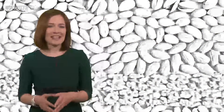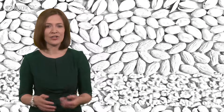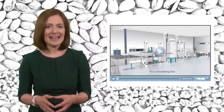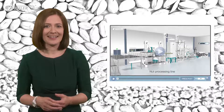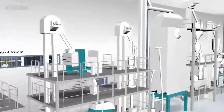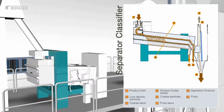Now let's move on to the separator and aspiration channel, which are typically installed as a sequential unit. The separator and aspiration channel uses size characteristics to remove foreign bodies. As you can see in the animation, the product is fed through the machine at the inlet and the intentional vibration of the machine moves the product along the sieves. There are three sections in the machine, each of which contains mesh of varying sizes to provide a separation of coarse particles at the top, smaller ones in the middle and fine ones at the bottom.